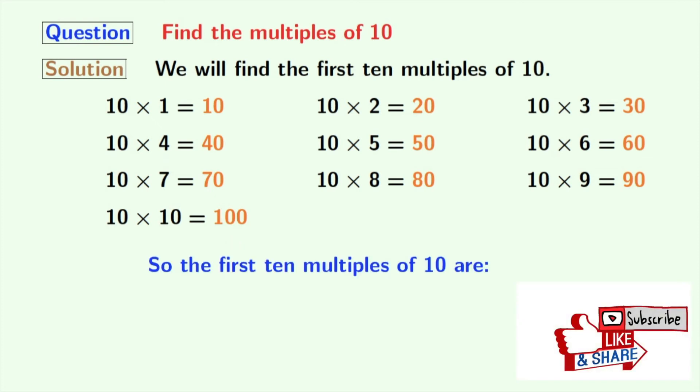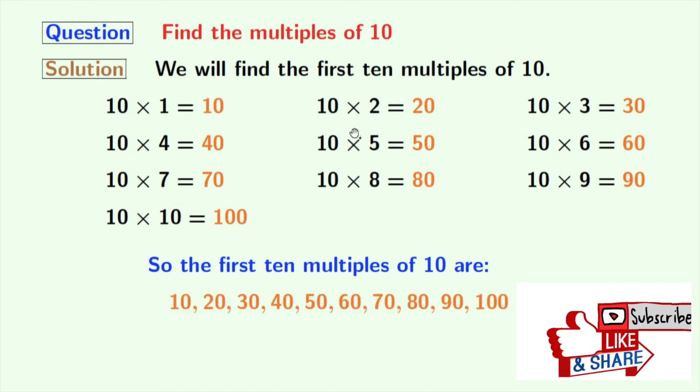So the orange ones are the first 10 multiples of 10. Those are 10, 20, 30, 40, 50, 60, 70, 80, 90, and 100.